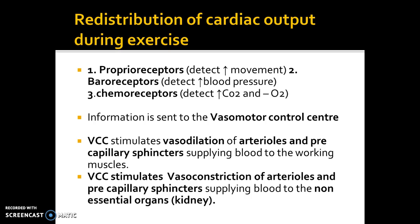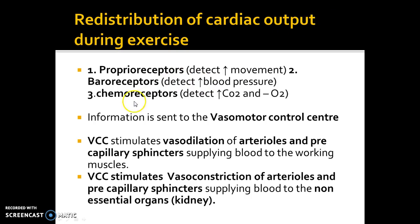Now I'm going to talk you through how physiologically that happens. Luckily it's very similar to what you've done before in relation to neural control of heart rate. In order to redistribute cardiac output, which is also called vascular shunt, here is what happens.